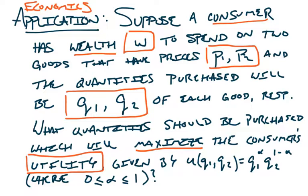Utility is a notoriously hard thing to quantify because it is subjective. But we're going to suppose that our consumer has a very specific utility function, given in the second-to-last line. The idea is that their utility function is based on the quantity of each good they purchase. Maybe you really love Snickers bars and you're not so crazy about Hershey's bars. Maybe Snickers should have a relatively large exponent, and alpha is some number between 0 and 1.